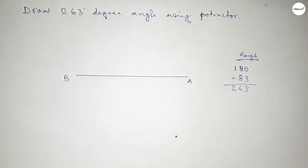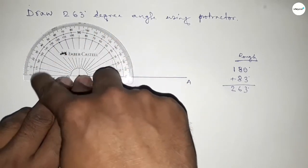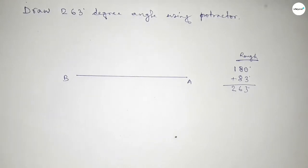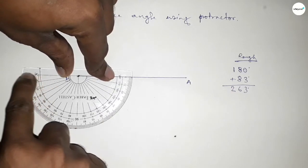So first we have to count 180-degree angle, so putting the protractor on the point B and counting angle. So this is 180 degrees. Putting the protractor on the point B by this way, and this is 180 degrees.